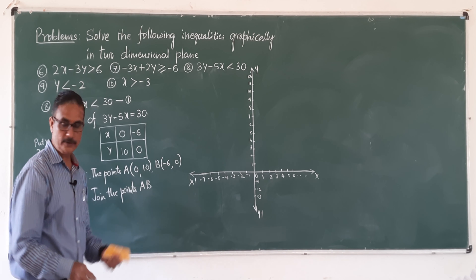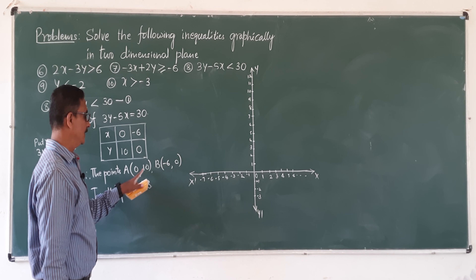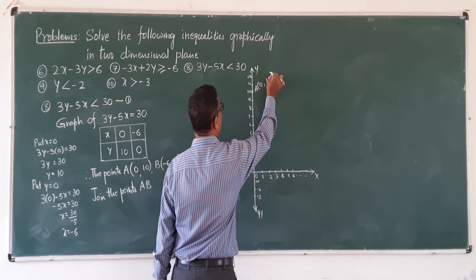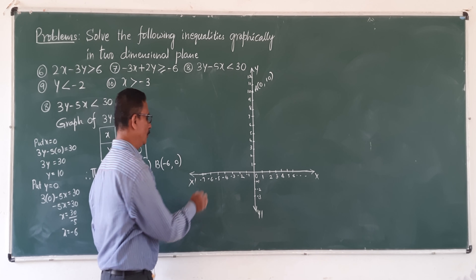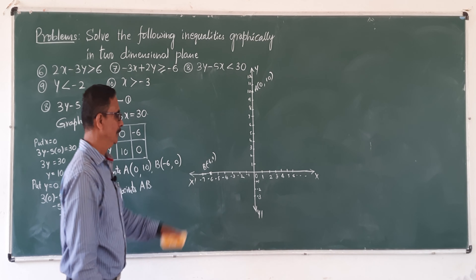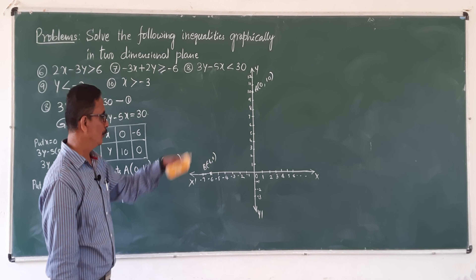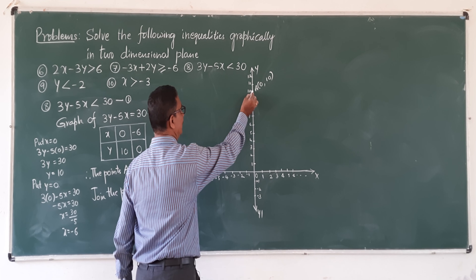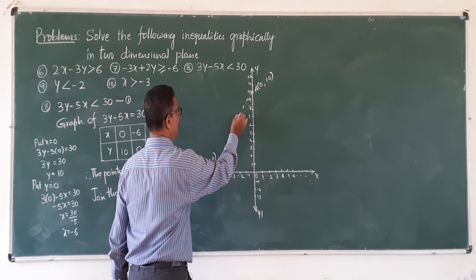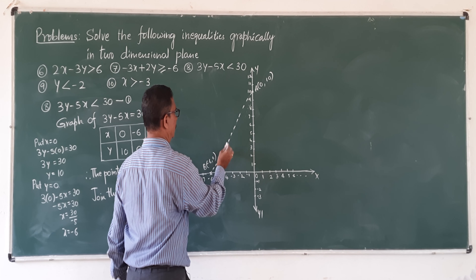Now locate those points. First point A is (0, 10): x is 0, y is 10. B is the point (minus 6, 0). Join those two points. Since it is less than — a strict inequality — we use a dotted line, not a thick line.